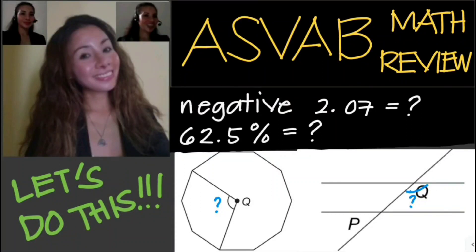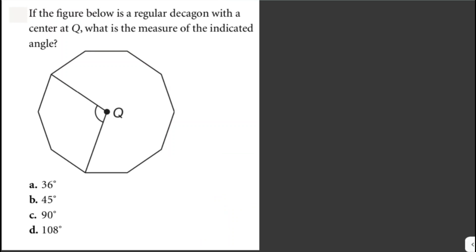Let's solve some problems. If the figure below is a regular decagon with a center at Q, what is the measure of the indicated angle? We are asked for this angle here. A regular decagon can be divided into ten equal sections by lines passing through the center, and the center is Q. Two of those lines form the indicated angle, which includes three of the ten sections.